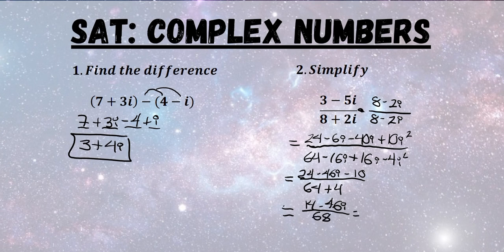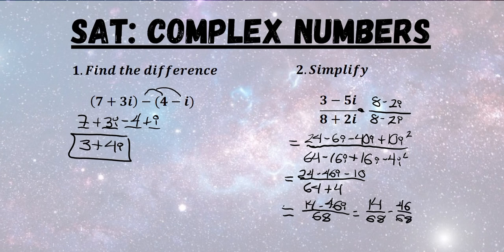Next we need to separate the fraction. So that we have 14 over 68 minus 46 over 68i. And then the last step will be to simplify each of these fractions.